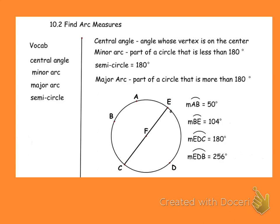Looking at circle F, arc AB is equal to 50 degrees based on what was given to us, so this is what we would call a minor arc. Now looking at arc BE — again it's less than 180 degrees, that's why it's minor.